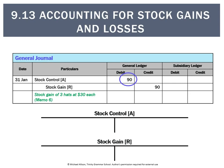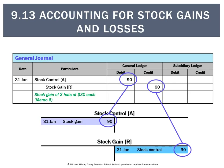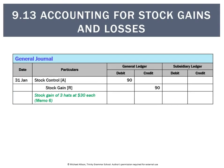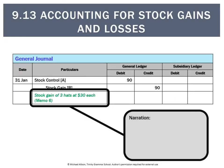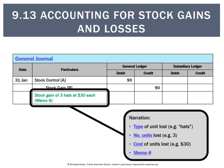Posting the entry: debit to stock control because the stock is going up, and credit to stock gain because it's a revenue — revenue goes up on the credit side. Getting our references right, we always want to put 'stock control' and not just 'stock.' For the narration, we want detail: the type (in this case, a hat), the number of units (in this case, 3), the cost of the units (in this case, $30), and the memo number, which records all of this detail.